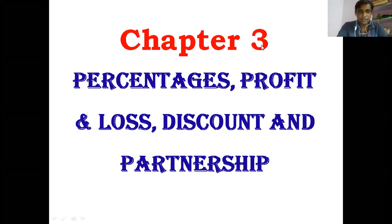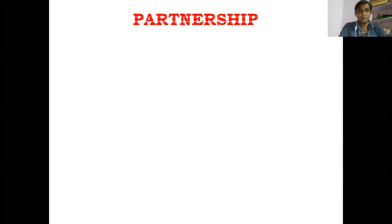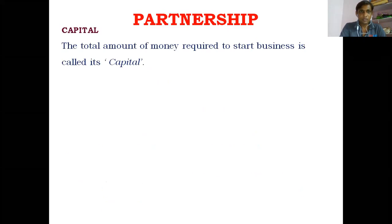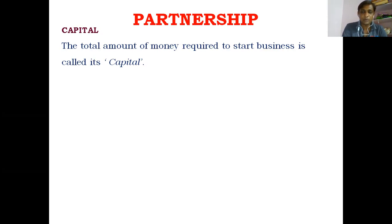In this chapter, we will discuss about partnerships. In the first class, we discussed percentages; in the second class, profit and loss and discount. Now we will discuss partnerships and solve problems. In partnership, some capital is there. Capital means the amount we are going to invest. The total amount of money required to start a business is called its capital — the amount we invest to start any business is called the capital amount.